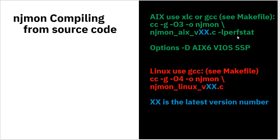We just avoid those in the code. If you want to get the VIO server stats, use -d VIO_SERVER, and if you want the shared storage pool stats, use -d SSP. For the Linux side of things, you're probably going to use the GNU compiler — similar details, but you don't need the extra library, as there isn't a performance library.